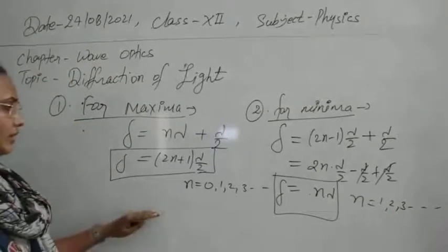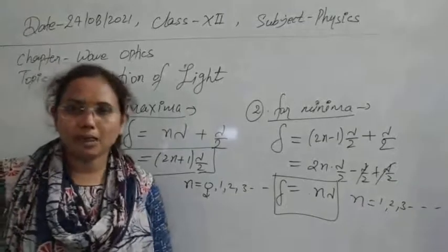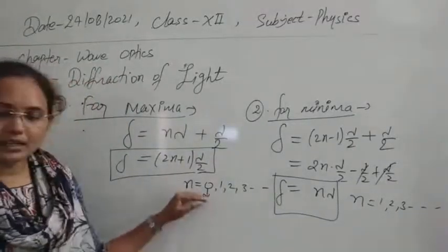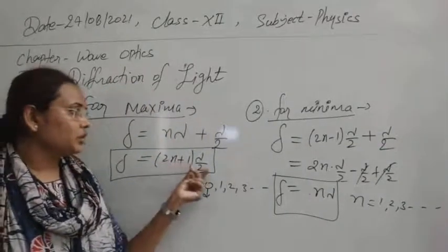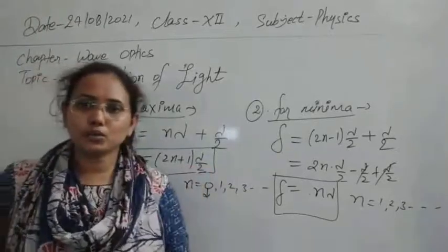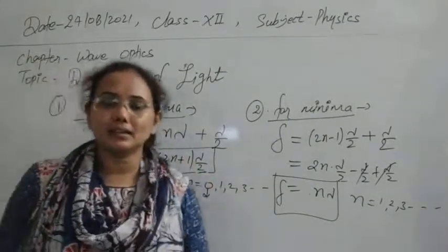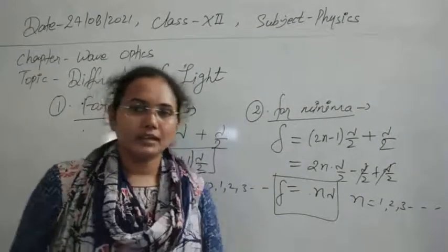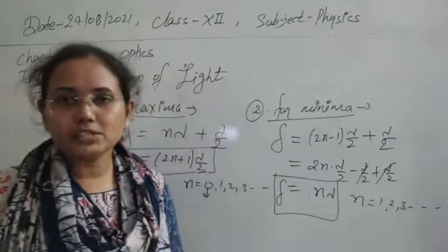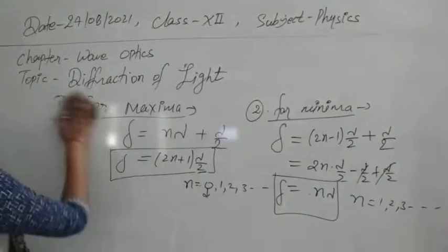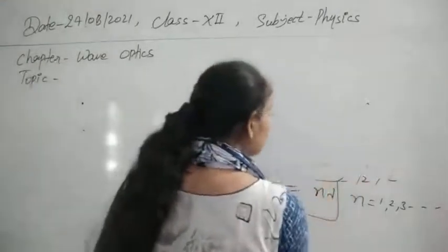For n equal to 0, we observe maximum intensity — this is always the central point of maximum intensity. At the central point in the interference pattern, there is no path difference. With n equal to 0, the lambda by 2 term comes from the introduction of the obstacle, giving lambda by 2 — same as in interference of light. Just like the YDSE, we can study the single slit diffraction experiment, which we will see later.